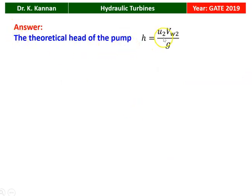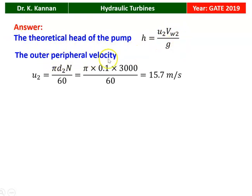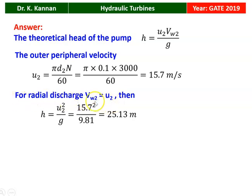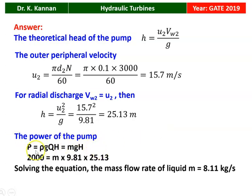The theoretical head of the pump: H = U₂·V_W2 / g. The outer periphery velocity: U₂ = π·D₂·N / 60 = π × 0.1 × 3000 / 60 = 15.7 m/s. For radial discharge, the whirl velocity at outlet equals the peripheral velocity: V_W2 = U₂. Therefore, H = U₂² / g = 15.7² / 9.81 = 25.13 meters. The pump power: P = ρ·g·Q·H = ṁ·g·H, so 2000 = ṁ × 9.81 × 25.13. Solving, the mass flow rate of the liquid equals 8.11 kilograms per second.